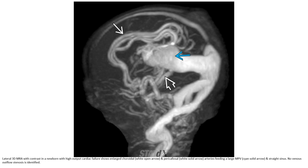CT angiogram with contrast in a newborn with high output cardiac failure shows a dilated straight sinus and pericallosal artery feeding a dilated ampulla and straight sinus. No significant brain injury is identified.